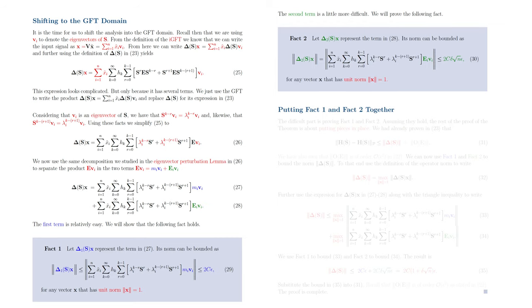Before we move on to their proofs, let us see how we can put fact 1 and fact 2 together. Because the difficult part of the proof is to prove fact 1 and fact 2, assuming they hold, the rest of the proof of the theorem is about putting pieces in place.